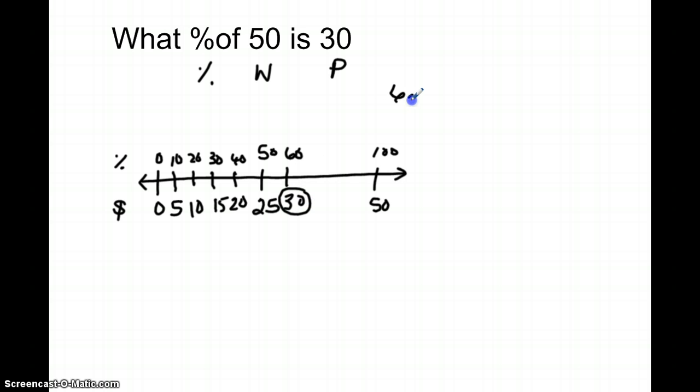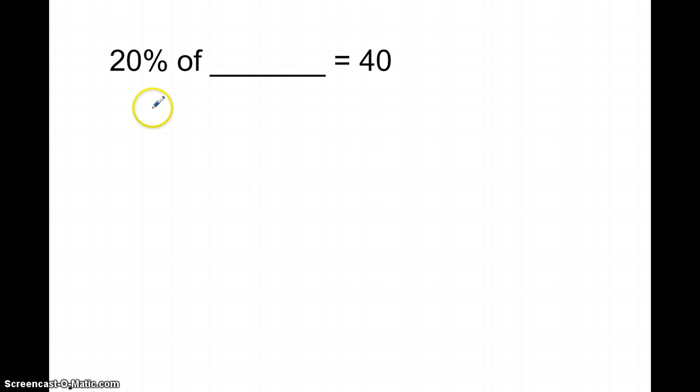In this problem, we have our percent of, our whole amount is missing, and $40 is our part. I would say to the students, your parents gave you $40 of whatever money was in your checking account or savings account. That was 20% of the money. We can use a double number line again to represent this number sentence.